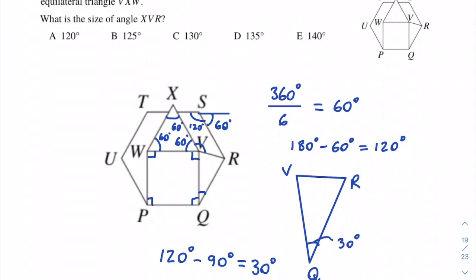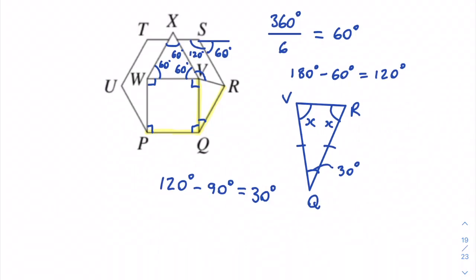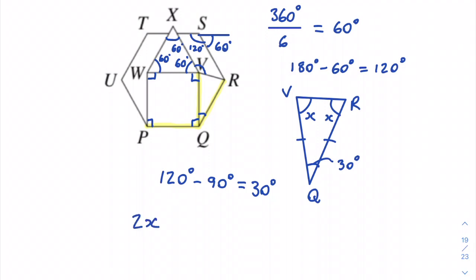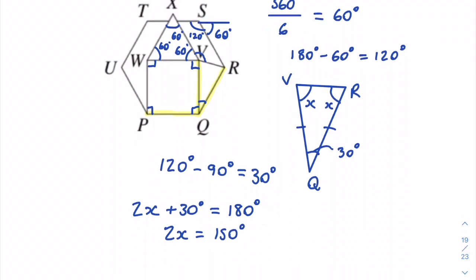This angle is 30 degrees. Since PQVW is a square, side PQ equals side VQ. And since PQ is also a side of the hexagon, side QR equals a side of the square. So VQ and QR are equal, making triangle VQR isosceles. Calling the base angles x, we get 2x plus 30 equals 180 degrees, so 2x equals 150.